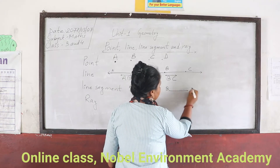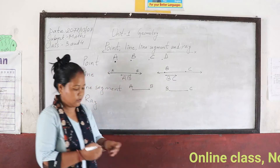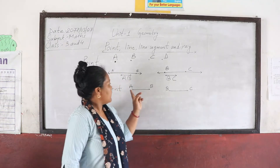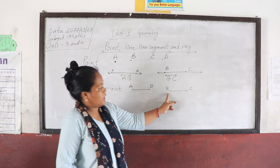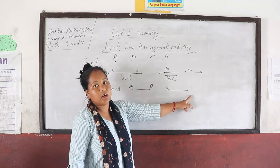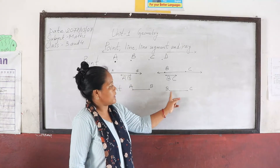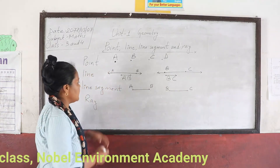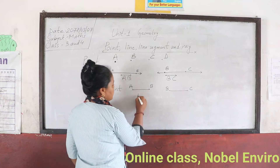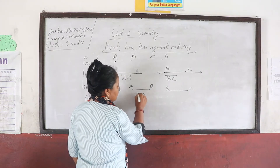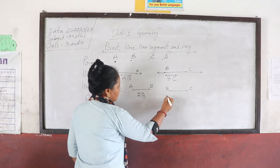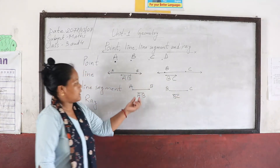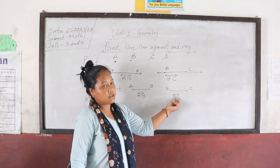B,C is also a line segment. A,B is a line segment and B,C is also a line segment — it has endpoints and fixed length. How to write a line segment: write A,B with a bar on top. B,C with a bar on top means A,B is a line segment and B,C is a line segment.